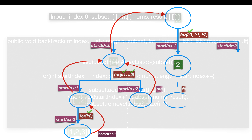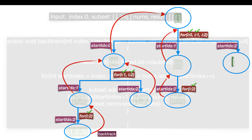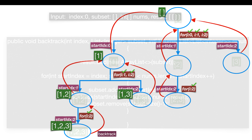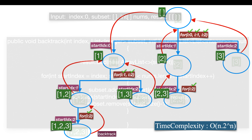Don't expect to get this logic in a single shot. It took me a couple of days to understand backtracking problems. As this is the first problem, it will obviously take a little more time to understand. I recommend watching the video a couple of times. Take pen and paper, write down the recursion tree, and see how the calls happen and how the data moves and updates. The most important points: on every recursive call, clone the subset and add it to the result, and whenever returning to the caller, always remove the last element from the subset.